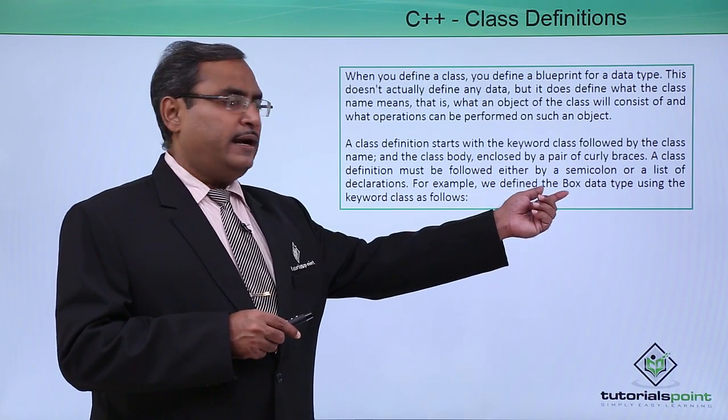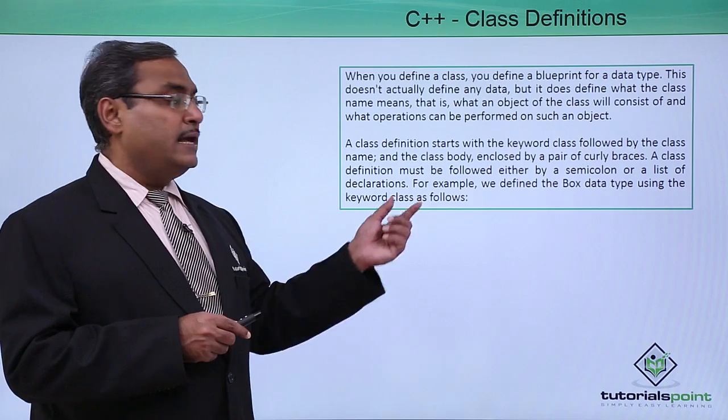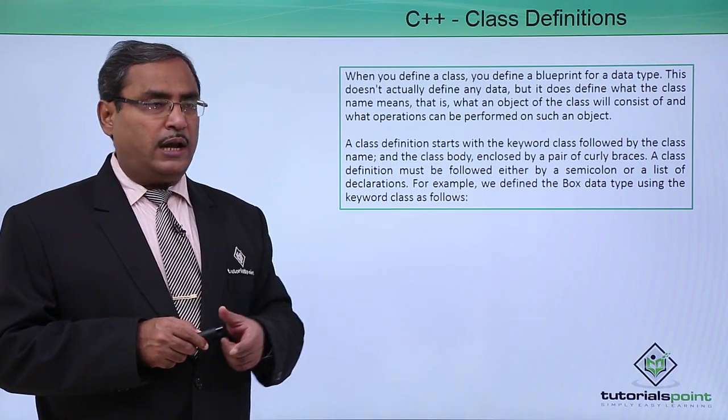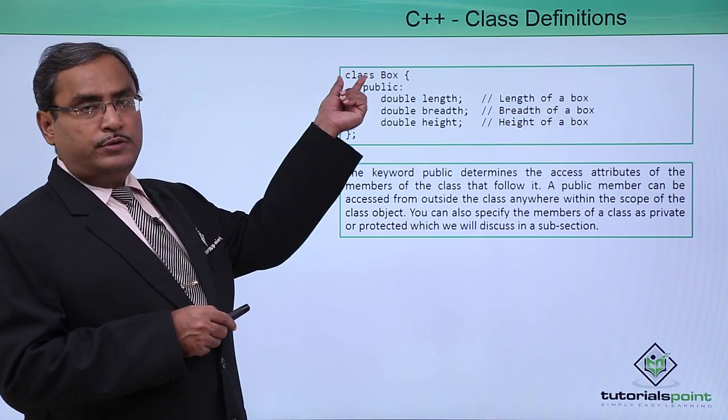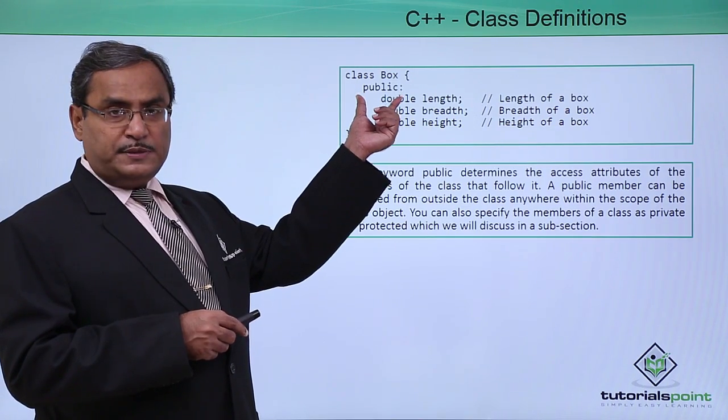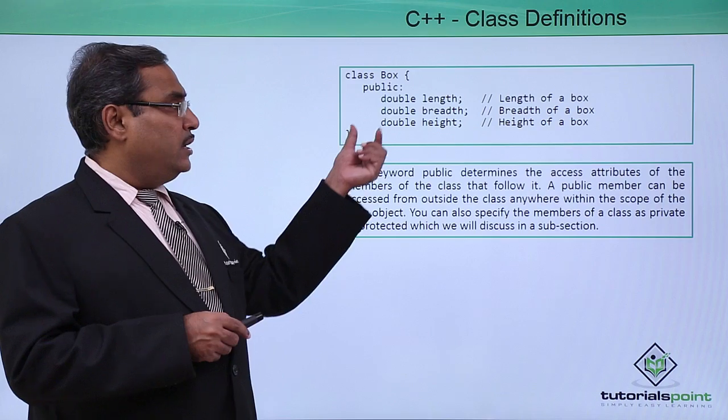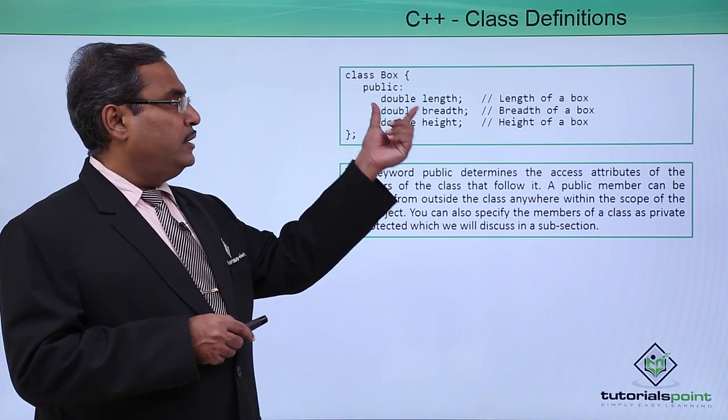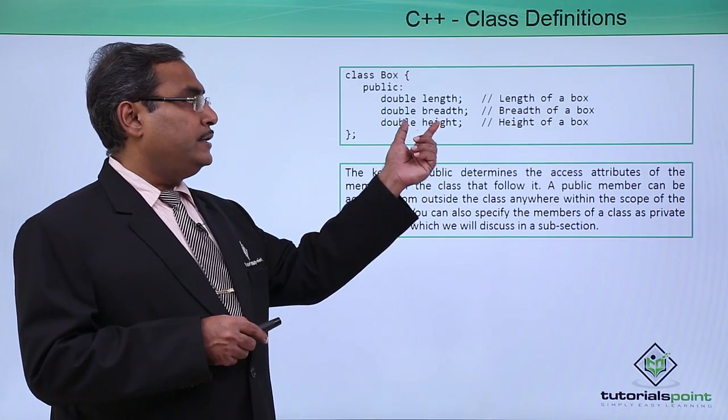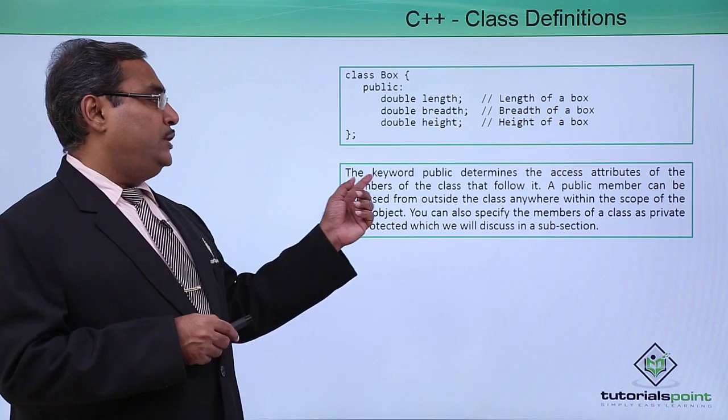For example, if we define a class box data type using the keyword class as follows: the keyword class should be used before the class name. Here is the keyword class and the name of the class is box. We have defined the class body enclosed within curly braces. Under the public section we have defined double length, double breadth, and double height. These are the member variables.